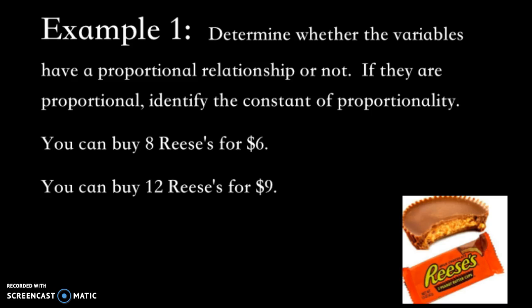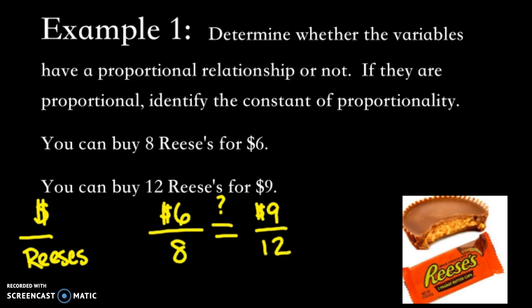So I might try to set up a proportion and see if these are proportional. So I might compare dollars to Reese's, and I make sure that I set up this the same way. So it looks like I have $6 for eight Reese's. And I want to know, is that equivalent to $9 for 12 Reese's? And we have a lot of strategies that we could use to solve this.